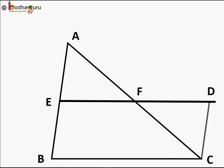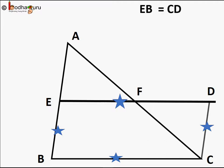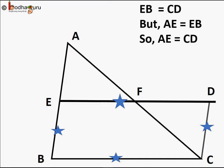We follow the same method here. We draw a line parallel to AB at point C and extend EF so that it intersects that line at point D. Now BCDE is a parallelogram as each pair of opposite sides are parallel — BE is parallel to CD and ED is parallel to BC. So EB is equal to CD. But AE is equal to EB, since E is the midpoint, so AE is equal to CD.